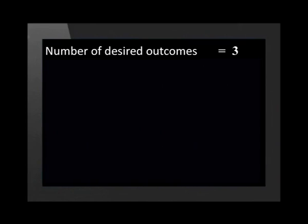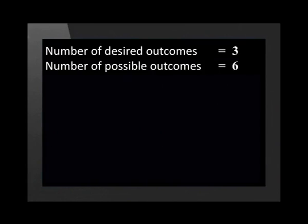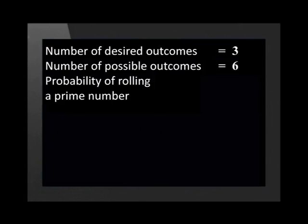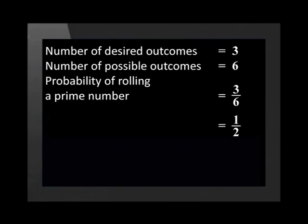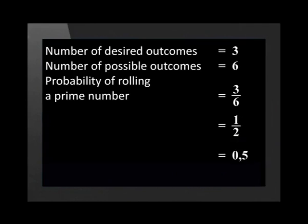Remember, to find the probability of an event occurring we need to put the number of desired outcomes over the number of possible outcomes for our experiment. The number of desired outcomes is 3 and the number of possible outcomes is 6. The probability of rolling a prime number on a dice is 3 over 6. We can reduce this to its lowest terms and get one half.